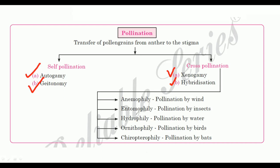Cross-pollination by wind is called anemophily. Insect pollination is called entomophily. Pollination by water is known as hydrophily. Pollination by birds is known as ornithophily. And pollination by bats is chiropterophily.